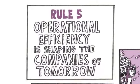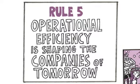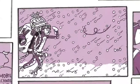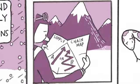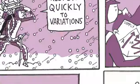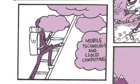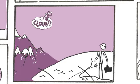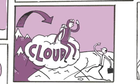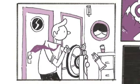Rule five, operational efficiency is shaping the companies of tomorrow. To respond quickly to variations, companies need to make their supply chains more efficient and reduce their carbon footprint. Mobile technology and cloud computing are major forces in making this possible, allowing businesses to set up in emerging markets faster and at lower cost.